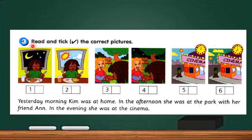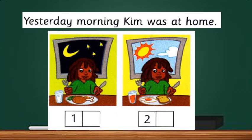Activity three, read and tick the correct picture. In this activity, we are going to read the text here. There are altogether three sentences and six pictures, which means that you have to tick three pictures based on these three sentences. Yesterday morning, Kim was at home. The keyword here is morning. And you have to choose the correct answer between picture one and picture two.